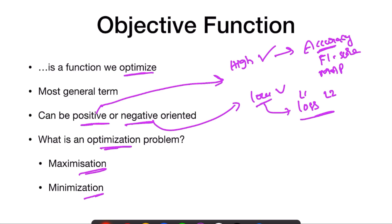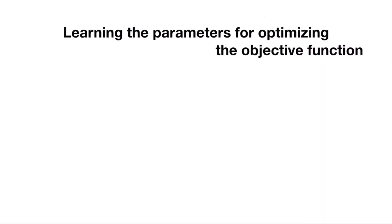Optimization means getting the optimal value for a particular quantity — that optimal value can be the maximum or minimum depending on the quantity type. The statement 'learning the parameters for optimizing the objective function' is too generic.